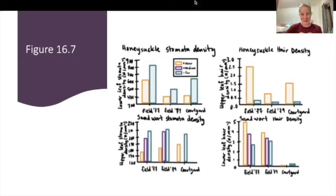So here's the second part of exam two, it's our second set of figures. The paper looked at stomata and hair density in sandwort and honeysuckle plants and this was testing the impact of air pollutants and environment on the growth of these plants.